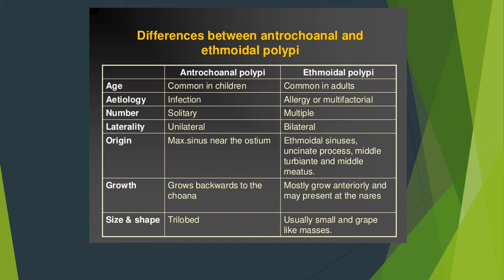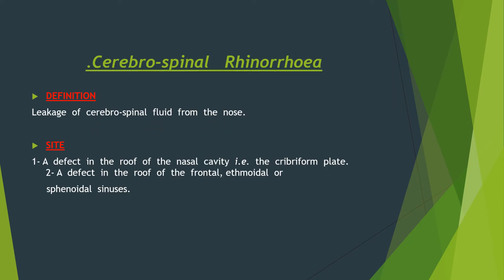Ethmoidal polypi originate from the ethmoidal sinuses, uncinate process, middle turbinate, and middle meatus. Growth: antrochoanal polyp grows backward to the choana, while ethmoidal polypi mostly grow anteriorly and may present at the nares. Size and shape: antrochoanal polyps are trilobed, while ethmoidal polypi are usually small and grape-like masses.